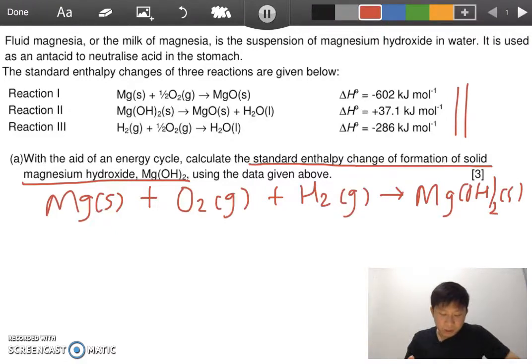First of all we check whether is it balanced. The equation is balanced because two oxygen on the left, two oxygen on the right, and hydrogen as well and magnesium as well. So this is the mission and I label it as x.